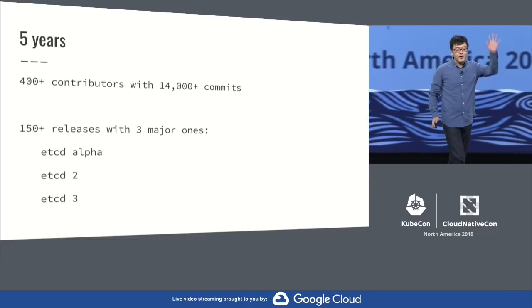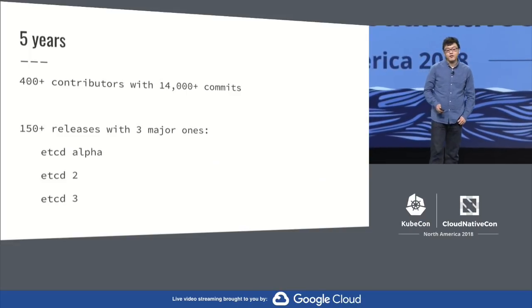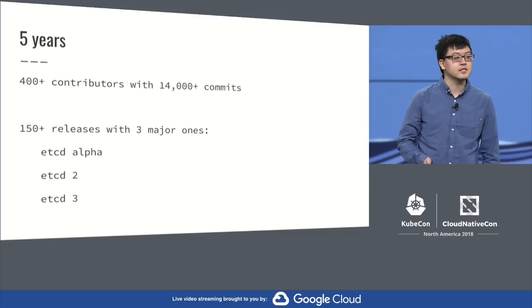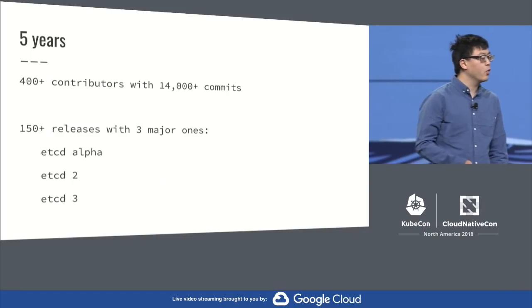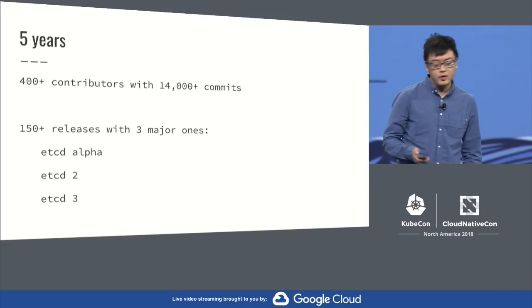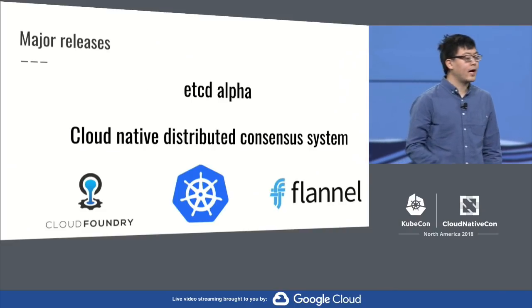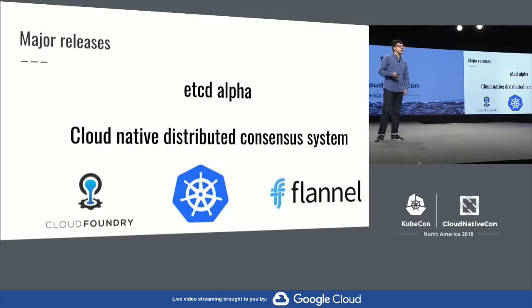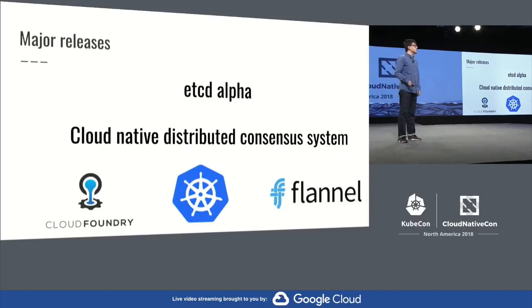Thanks, Brendan. So in the past five years, over 400 contributors have checked in more than 14,000 commits into the project. Together, we made more than 150 releases with three major ones: etcd Alpha, etcd 2, and etcd 3. So etcd Alpha is our first release with the goal of being the cloud-native distributed consensus system. It provides a standard HTTP RESTful API, which is very easy to integrate with and to interact with. To be cloud native, etcd supports dynamic reconfiguration, which allows users to add, remove, or replace nodes easily in cloud environments. In this release, we got a few early adopters, including Cloud Foundry, Kubernetes, and later on, Flynn.